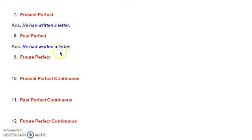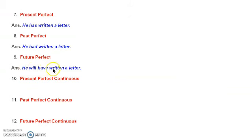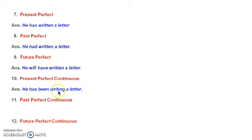For future perfect, to show the completion and perfection, I use V3 form 'written'. For present perfect continuous: 'he has been writing a letter.' Writing shows the continuity of the action — ing form is used here. 'Has' shows the present form and 'been' shows the perfect tense, because I am using the V3 form of the be verb.